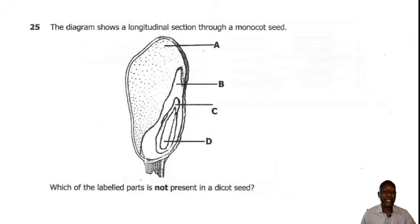Question 25. The diagram shows a longitudinal section of a monocot seed labeled A, B, C and D. Which of the labeled parts is not present in a dicot seed? Dicot seeds are what are known as non-endospermic seeds because they lack an endosperm. So the correct answer is A.